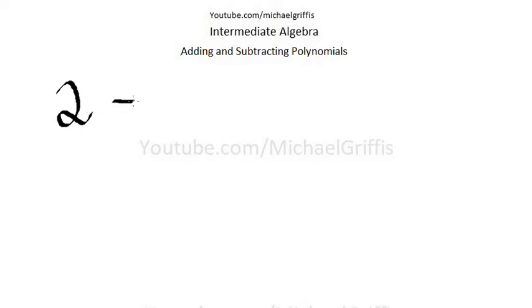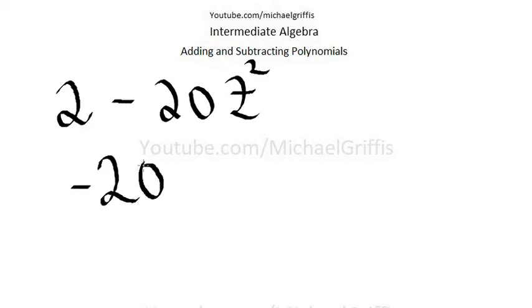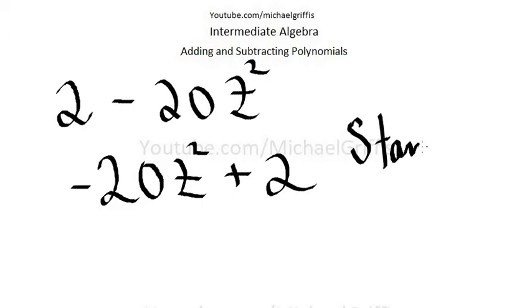Two minus twenty z squared. Let's write this thing in standard form. So standard form, it would be written like this. This is standard form.